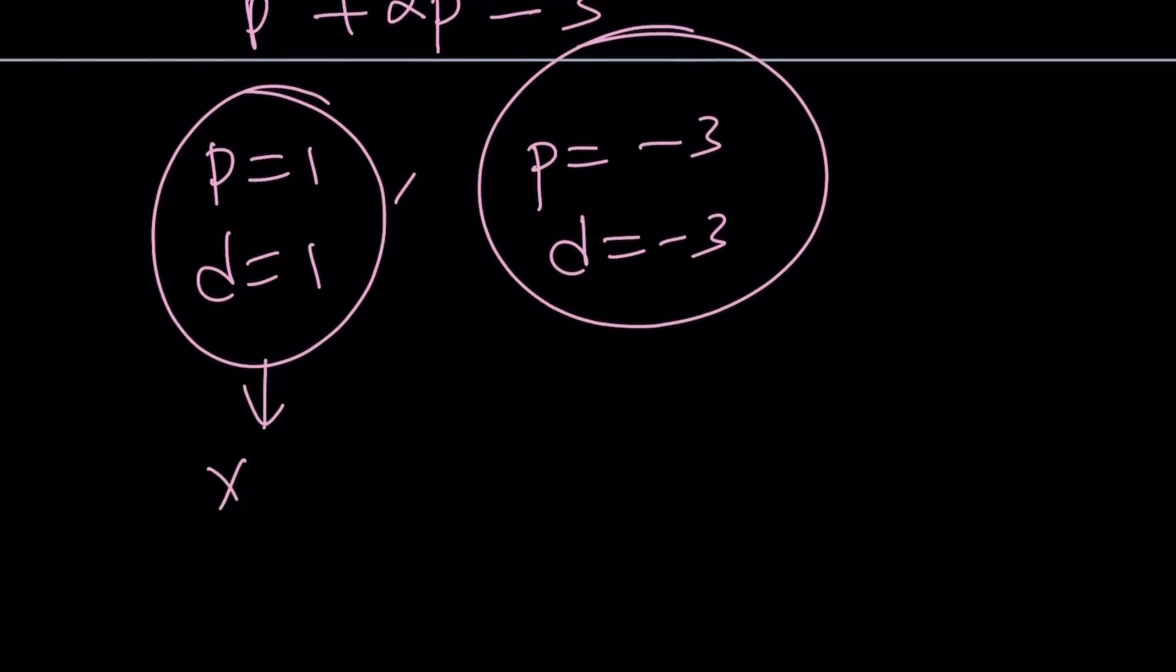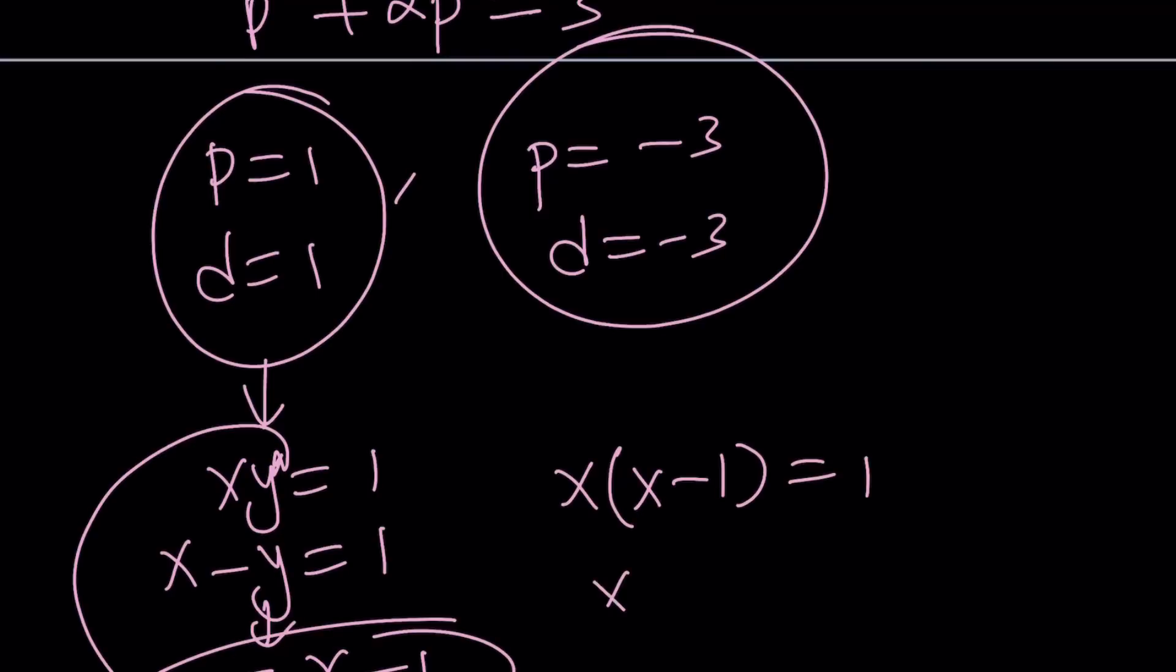p is the product, so xy equals 1 and we get x minus y equals 1. I can basically replace x with y plus 1 or y with x minus 1. Let's do the second: y equals x minus 1. Let's plug it in. x times x minus 1 equals 1. x squared minus x minus 1 equals 0.